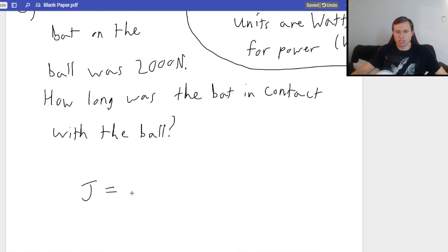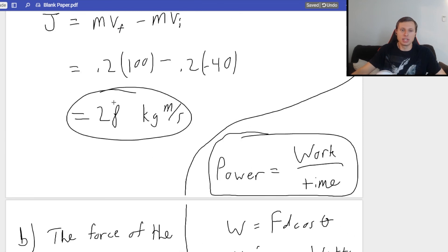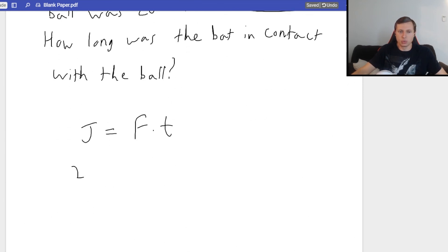J equals force times time, and we found J. J was impulse in part A. We said the impulse was 28. So we're saying 28 equals force times time. I give you force, I said it was 2,000.